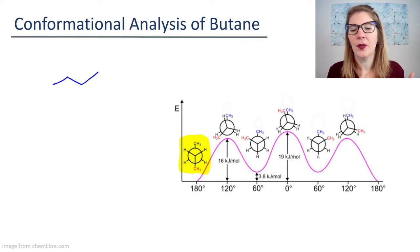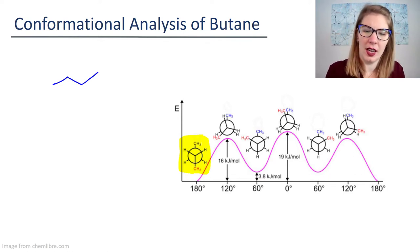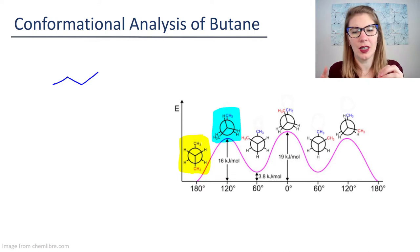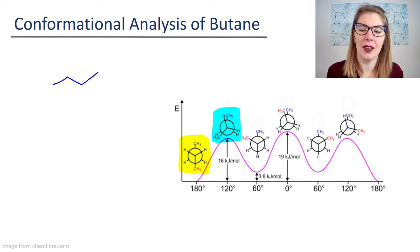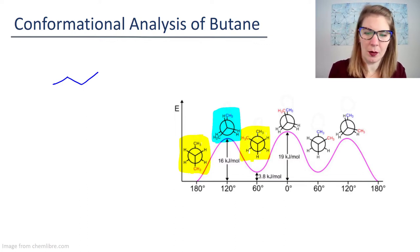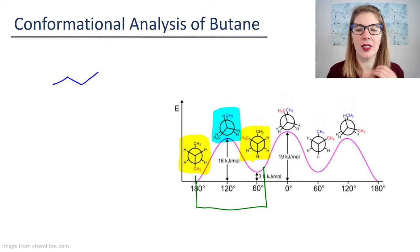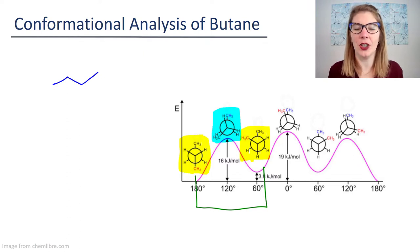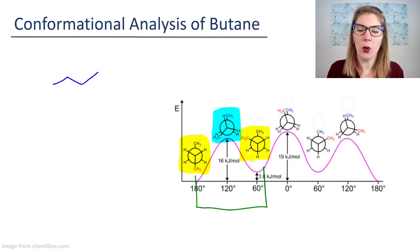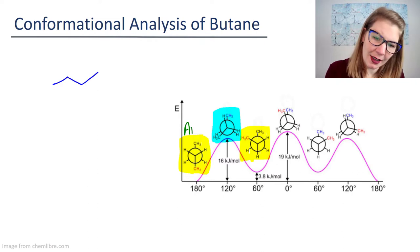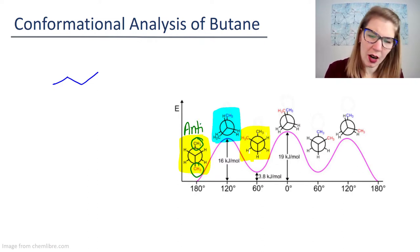If we look at how we rotate in such a way that we get something that's eclipsed, then this is higher in energy than something that's staggered. But notice how even our staggered conformations—these two, for example—are not the same energy. So in staggered conformations, it's not just 'staggered' anymore once you get to a bigger, more complex structure like butane. We're going to call this anti because the two groups are opposite one another.